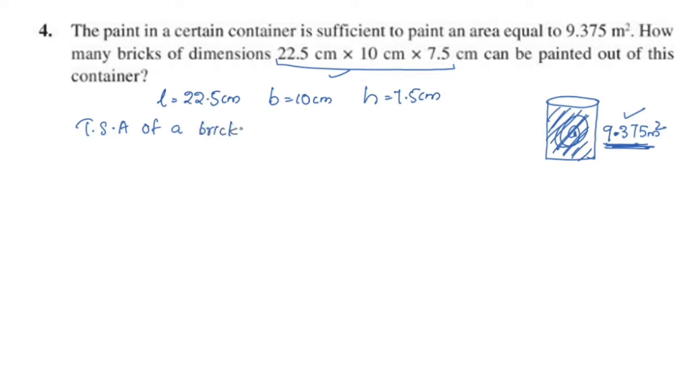The total surface area of the brick is equal to - this is the shape of a cuboid. The total surface area is 2 into LB plus BH plus HL. Equal to 2 into 22.5 into 10 plus 10 into 7.5 plus 7.5 into 22.5.